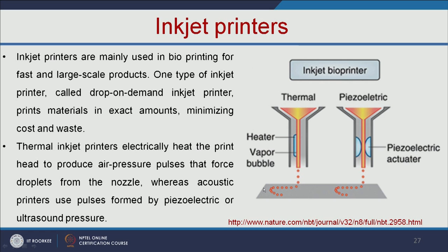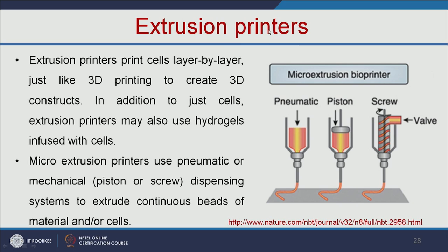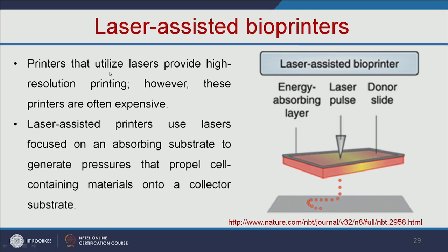The next type is extrusion printers. Extrusion printers print cells layer by layer, similar to 3D printing. In addition to just cells, extrusion printers may also use hydrogels infused with cells. Micro-extrusion printers use pneumatic or mechanical — piston or screw — dispensing systems to extrude continuous beads of material or cells. The third type is laser-assisted bioprinters, which utilize lasers that provide high-resolution printing, though these printers are more costly. Laser-assisted printers use lasers to focus on an absorbing substrate to generate pressure that propels cell-containing material onto the collector substrate.